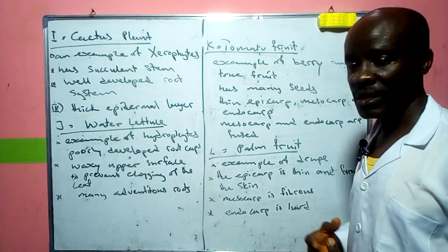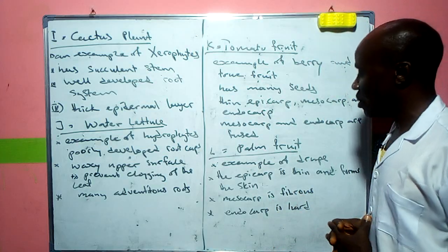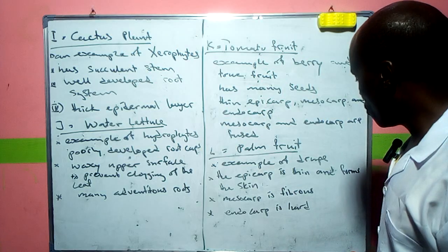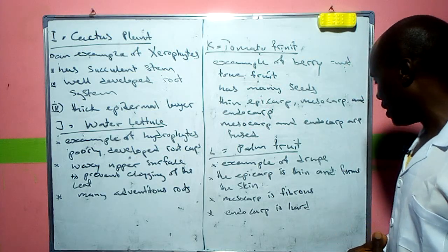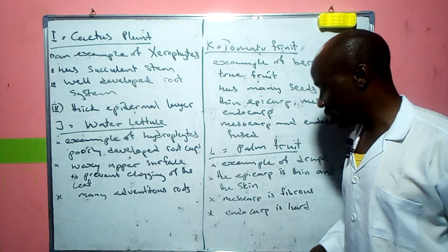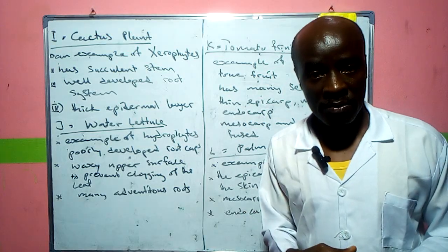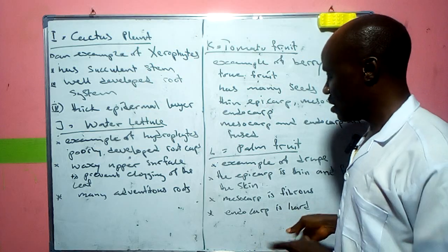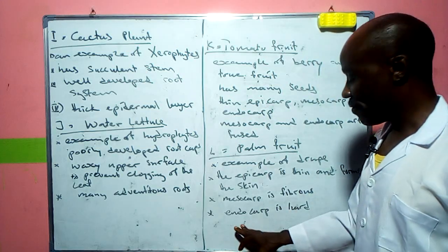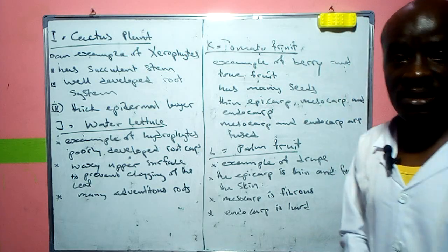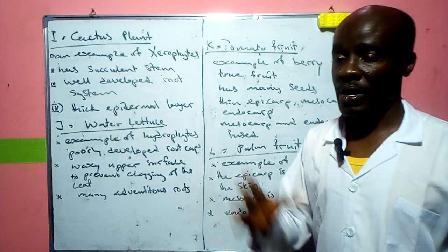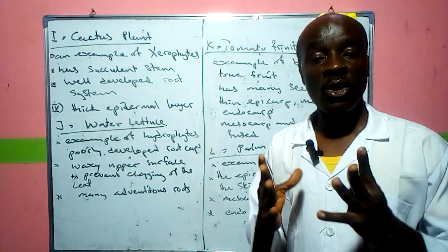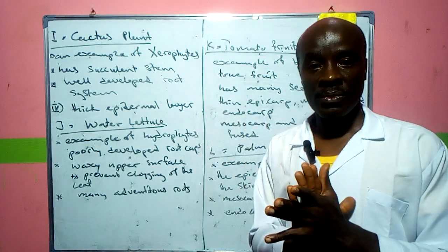The palm fruit is an example of a drupe. The epicarp is thin and forms the outer skin. The mesocarp is fibrous — this is different from the mango, which we'll discuss shortly. The endocarp is very hard. These are the key features of a drupe: the epicarp is thin, mesocarp is either fibrous or fleshy, and the endocarp is thick and hard.